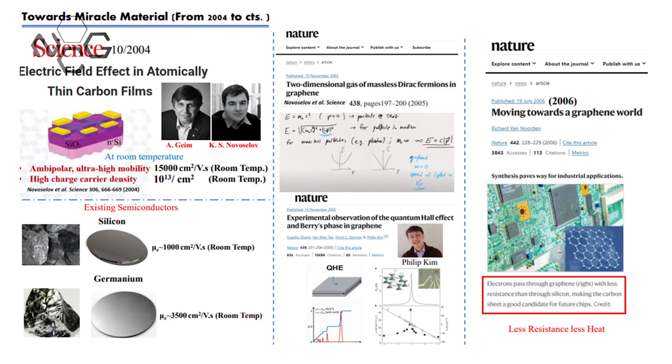Researchers have been trying for decades to introduce a band gap. Many reports claim graphene has a tunable band gap that can be achieved by graphene functionalization. In functionalization, we can do hydrogenation, chlorination, and fluorination of graphene, but compared to all three, fluorination is the best way to achieve a tunable band gap.